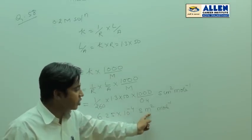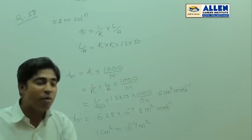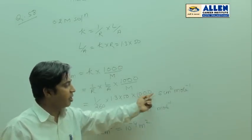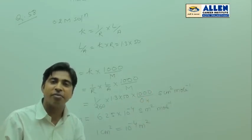Siemens meter square per mole. Because 1 cm equals 10 to power minus 4 meter square, so cm is converted to meter square. Take care.